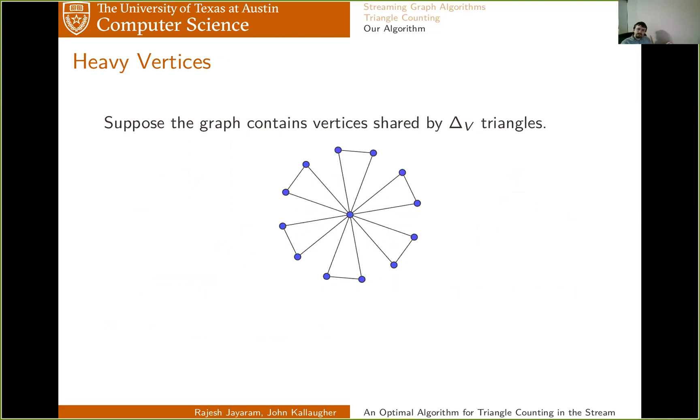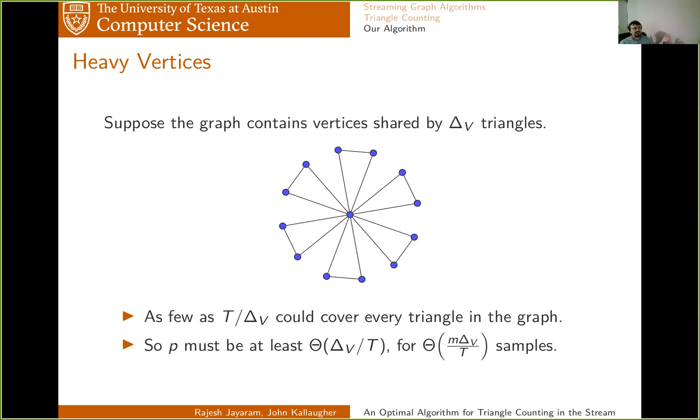In particular, imagine that we have a graph where vertices are allowed to be shared by up to delta V triangles. Well, now there could be as few as T over delta V of these vertices that are at the center of a bunch of hubs of delta V triangles. And moreover, it could be the case that for each of these vertices, all of the edges incident to that vertex arrive first in the stream, and all of the edges around arrive last. Which would mean that if you don't sample any of these T over delta V vertices, you won't see any triangles. So definitely, P will have to be at least delta V over T for you to have any chance of getting a good estimator. And that gives you M delta V over T samples, which is great when delta V is small, but in general is non-comparable to the other algorithm that we described. In particular, when delta V is as large as T, this doesn't give you anything sublinear at all.